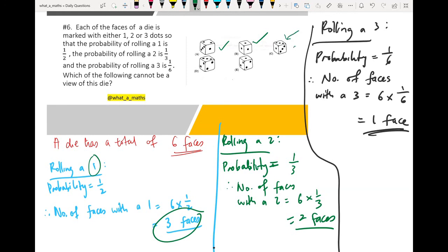And C, 2 faces with number 3. This will not happen because I can only have 1 face for 3 dots. But over here in C, I have 2 faces with 3 dots. So the answer is C.